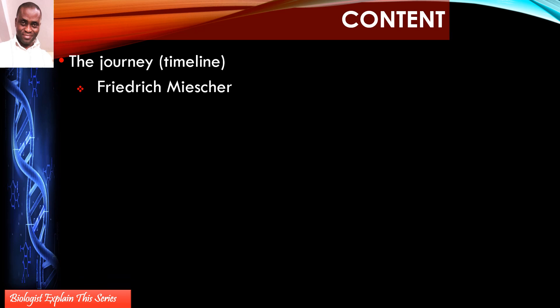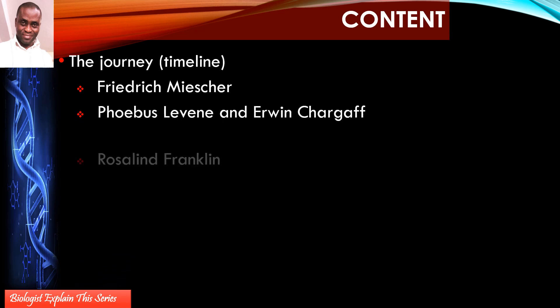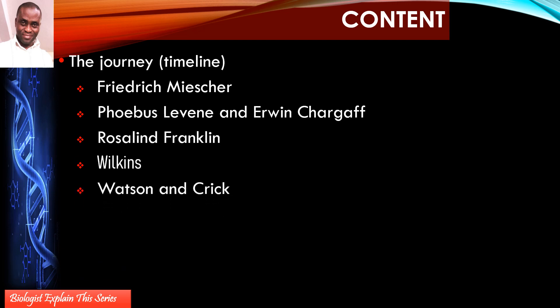In this particular edition, we want to consider the timeline concerning how DNA came to be regarded as the genetic molecule. We'll cover Friedrich Miescher, Phoebus Levine, Erwin Chargaff, Rosalind Franklin — who unfortunately missed the Nobel Prize in 1962 for Physiology and Medicine — and then Wilkins, Watson, and Crick, who are reputed to have figured out the structure of DNA. We'll also cover nucleotides, genes, and the genetic code.